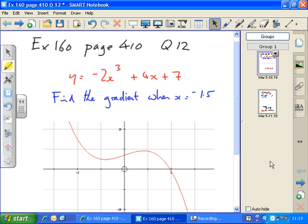We have to find the gradient when x equals minus 1.5. So minus 1.5 is about here. If I were to go up to this point and then draw a tangent to the curve at that point, I'm after the gradient at that point. You can see it's going to be a negative gradient, so I'm expecting a negative answer at the end.